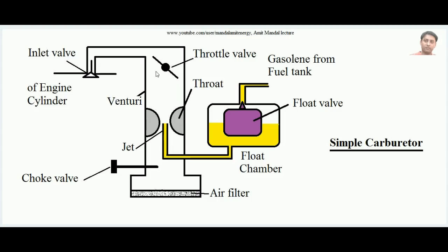By opening and closing the throttle valve you can control the amount of mixture. The mixture of gasoline and air is called the charge. There is also a choke valve. The air filter's job is to screen off any dust and debris present in air before it mixes with gasoline. Air passes through this spongy air filter so that dust is screened off before entering the venturi. This is the inlet valve to the cylinder.